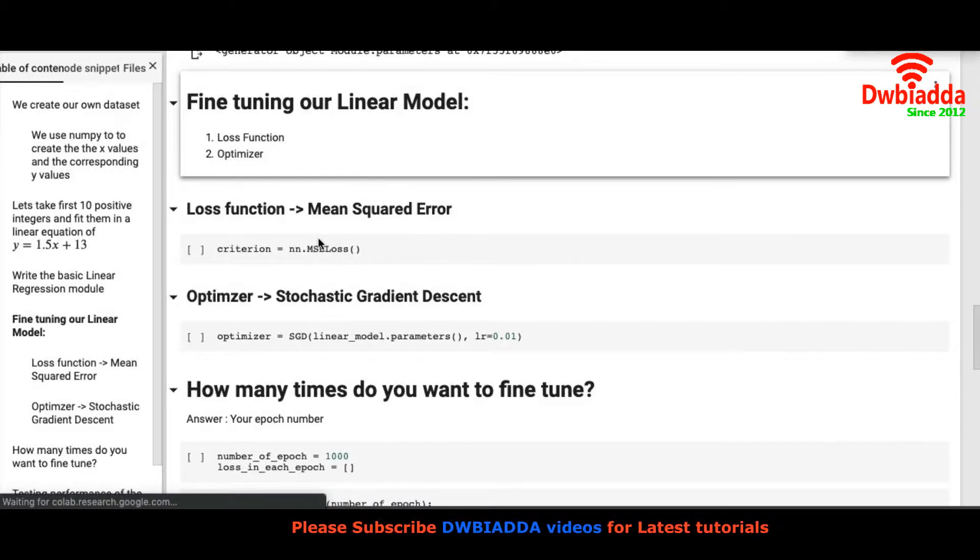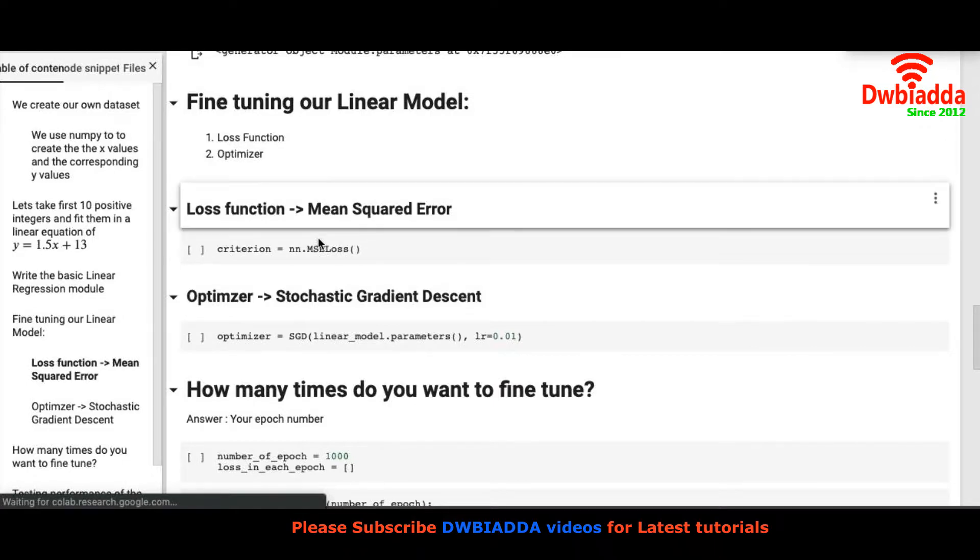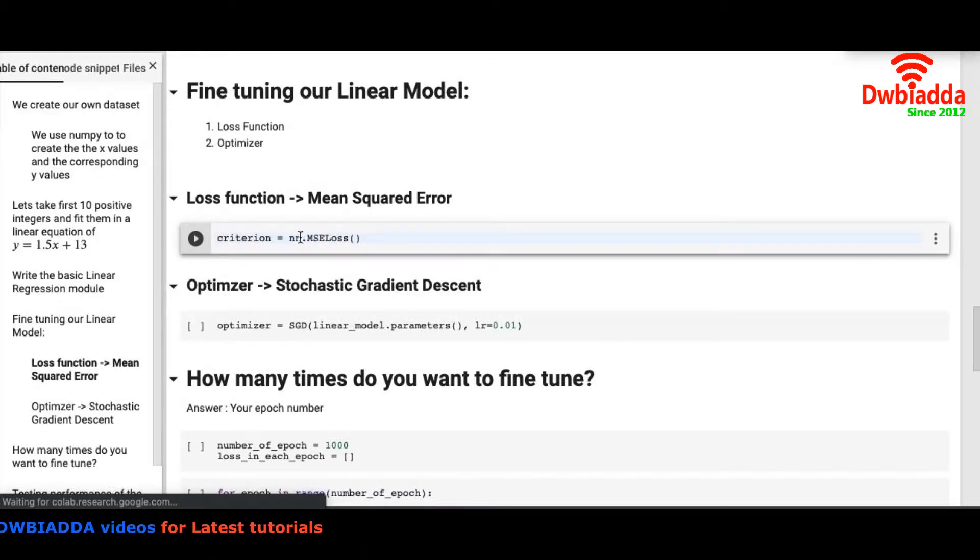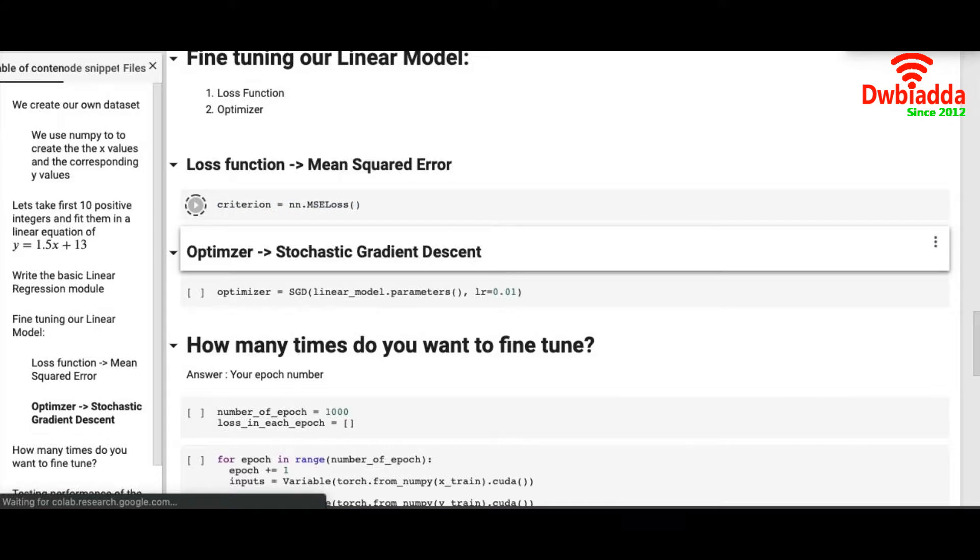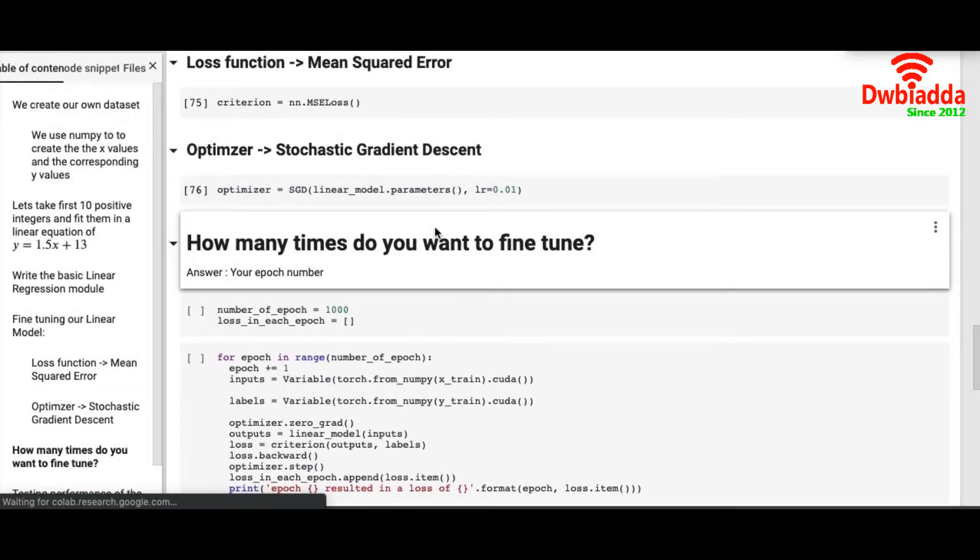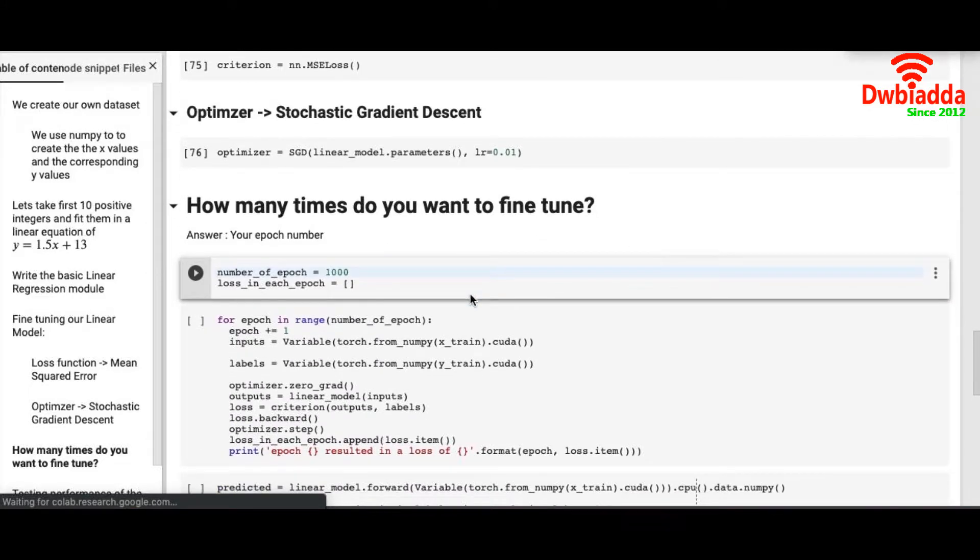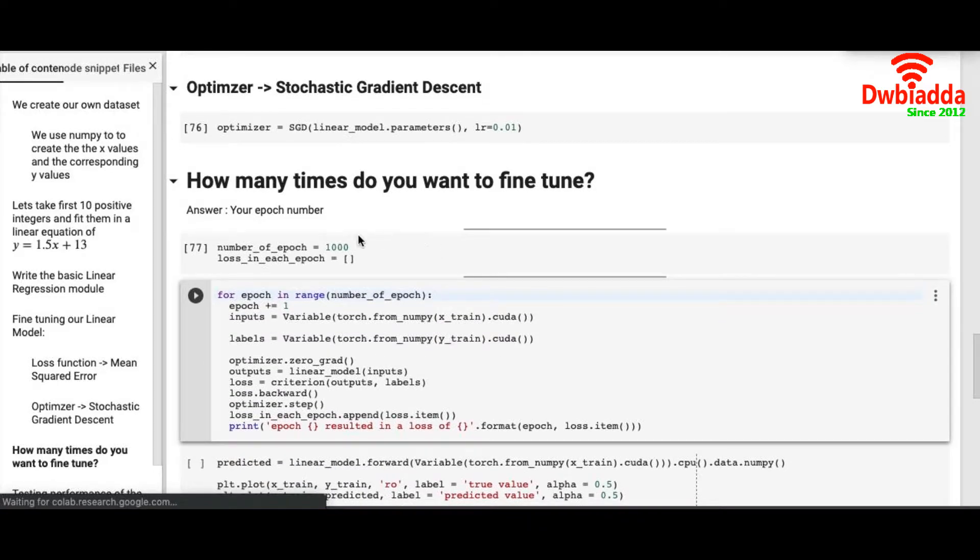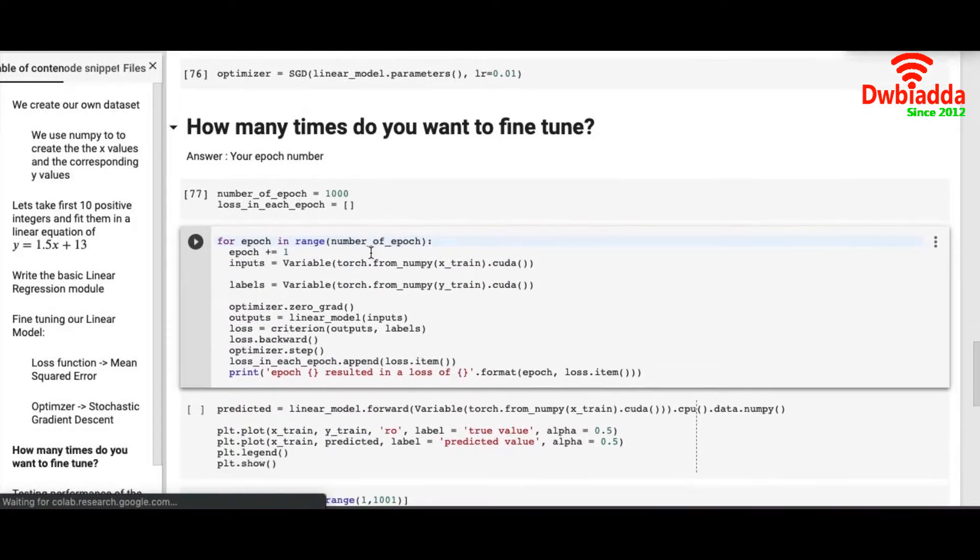For fine tuning our linear model we have two aspects: loss function and optimizer. In the last video I discussed that loss function can take many forms, but for today's linear regression model we are using nn.MSELoss, that is mean squared error. For optimization we're using stochastic gradient descent. You have to decide how many times you want to iterate through all your data points. The more you iterate over your data points the better your fit is, but it is equally challenging for computation. So choose your number of epochs judiciously. I have chosen 1000 because I think it should be enough.